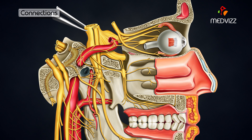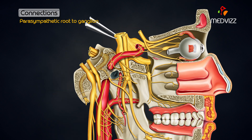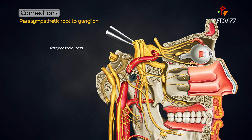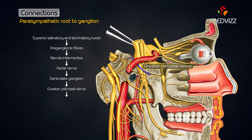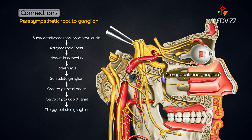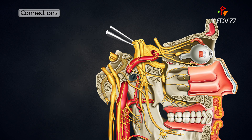Connections: The parasympathetic root of the ganglion is formed by the nerve of the pterygoid canal. It carries preganglionic fibers that arise from neurons near the superior salivatory and lacrimatory nuclei and pass through the nervous intermedius, the facial nerve, the geniculate ganglion, the greater petrosal nerve, and the nerve of the pterygoid canal to reach the ganglion. The fibers relay in the ganglion.